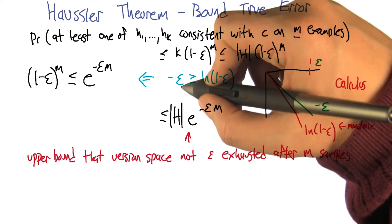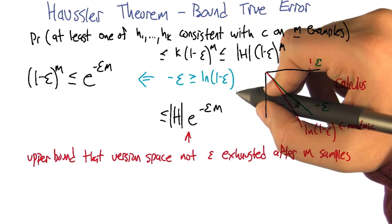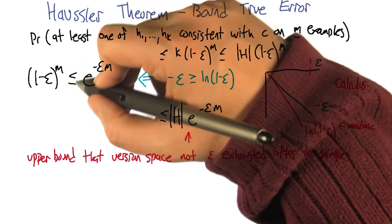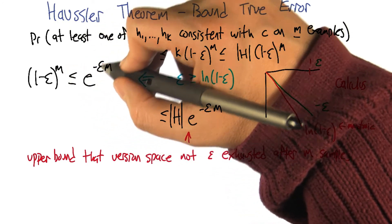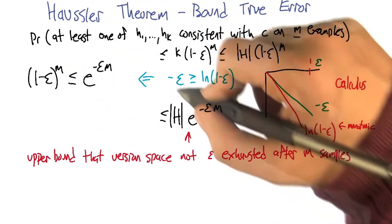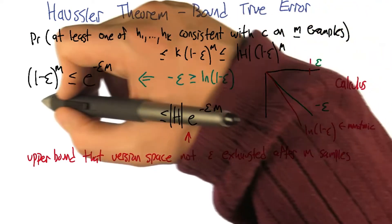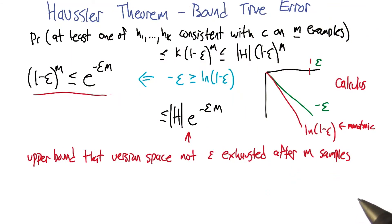Good. All right. So if that's the case, if we accept this line, then it's also going to be the case that 1 minus epsilon to the m is less than or equal to e to the minus epsilon m. So why is that? If you multiply both sides by m and then take e to the both sides, you get exactly this expression. Sure.